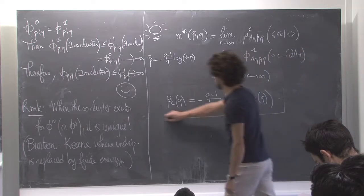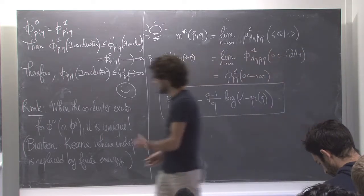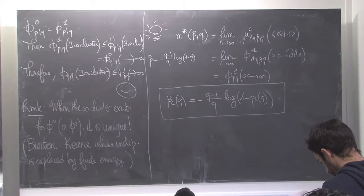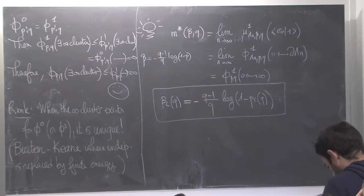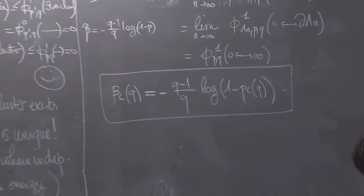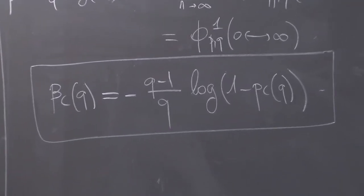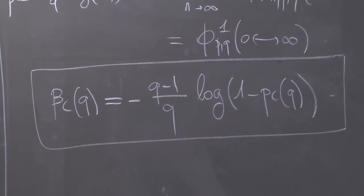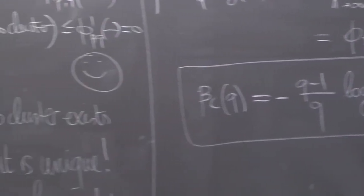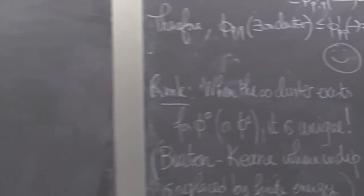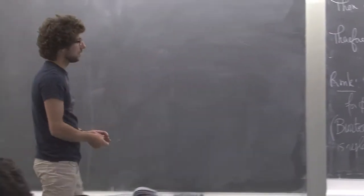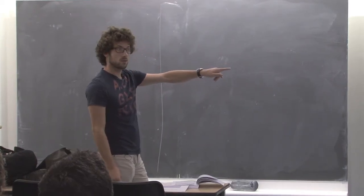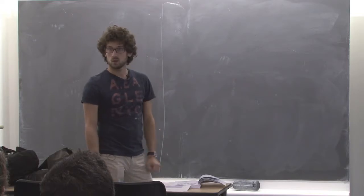So we have a direct relation: if we want to compute the critical value of the Potts model, it's sufficient to compute the one of the random cluster model. I really want to highlight the fact that except for the Ising model, where you can save the day with some special correlation inequalities which are not easy to get at all, I actually do not know any proof of the existence of a beta_c for the Potts model which does not involve the random cluster model.